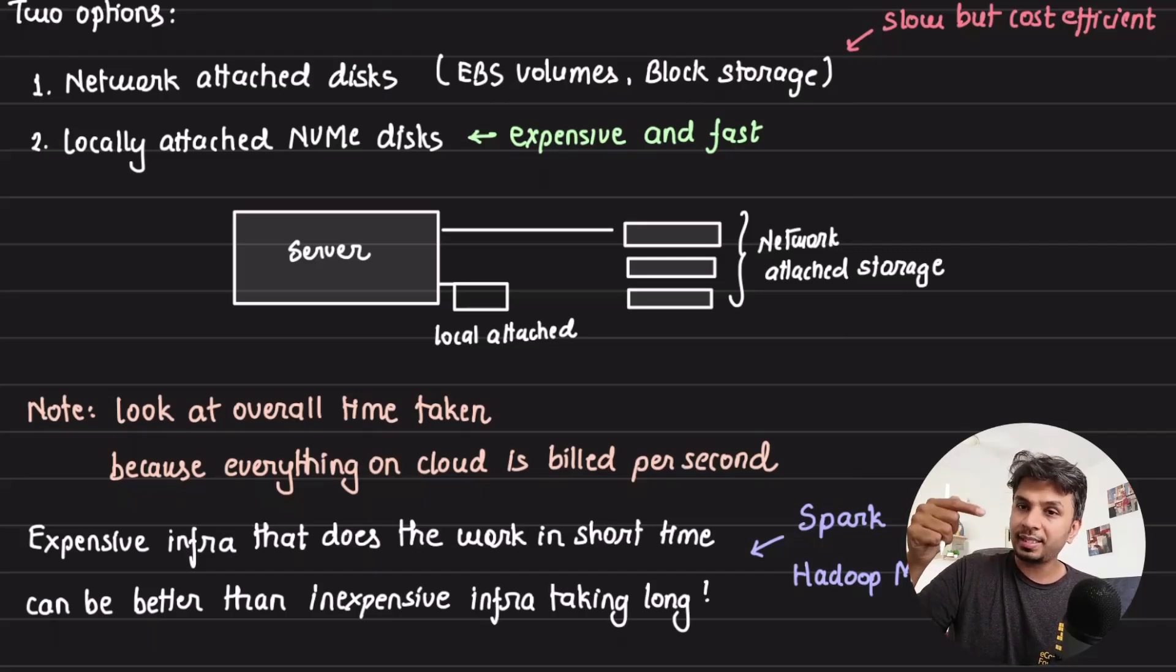everything happens like these disks are literally attached to the hardware. So you get, so they are extremely fast, but again, the cost of these are very high. But again, the trade-off remains the same. If I'm using expensive, if I'm taking an expensive trade-off, like trade-off against expensive stuff, and if I'm doing my entire thing in lesser amount of time, I would save money.